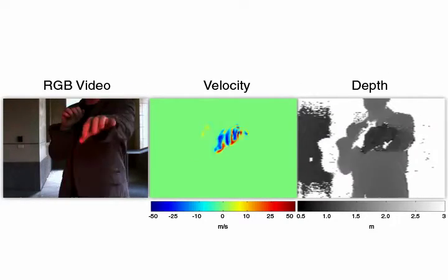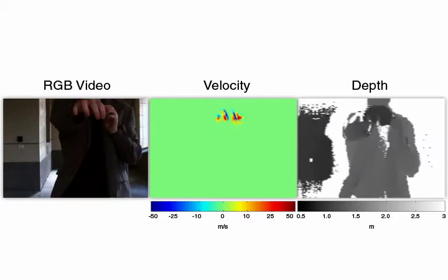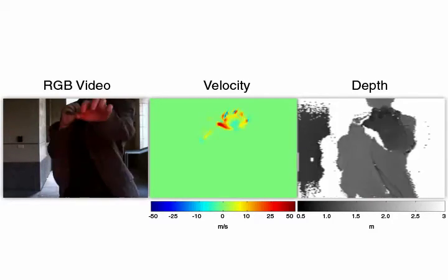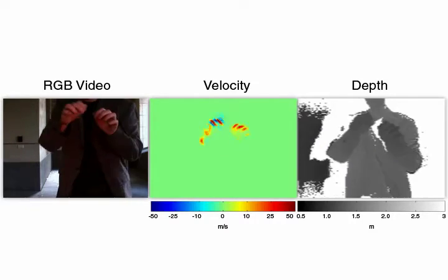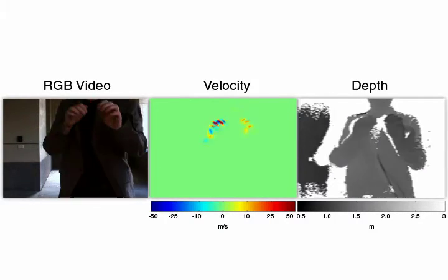Slight alignment errors around edges are due to the imperfect alignment of the three measurements taken with our camera. These measurements are captured in quick succession. Using multiple synchronized sensors, however, these could be recorded instantaneously and mitigate artifacts.